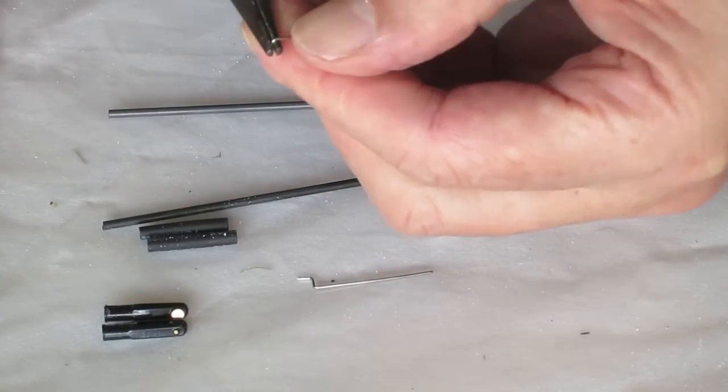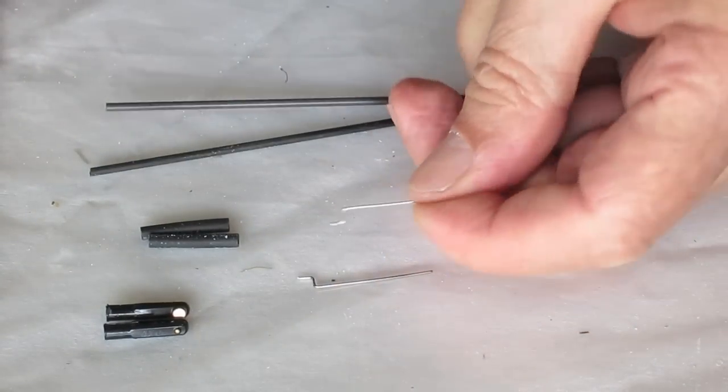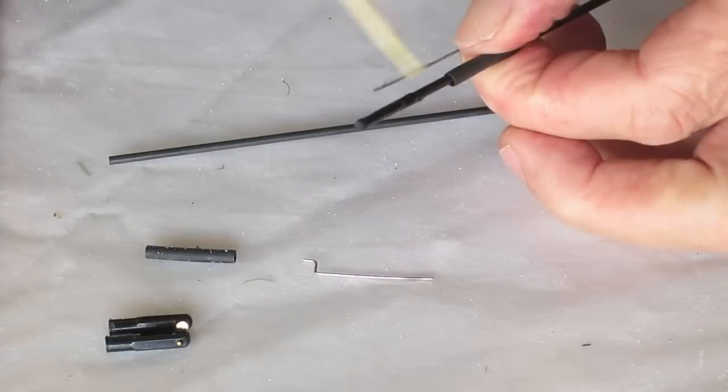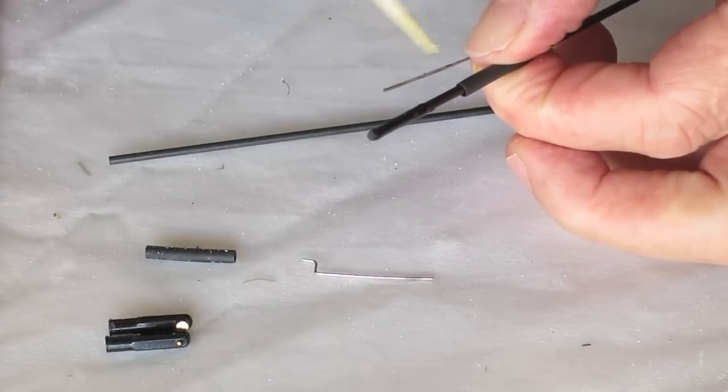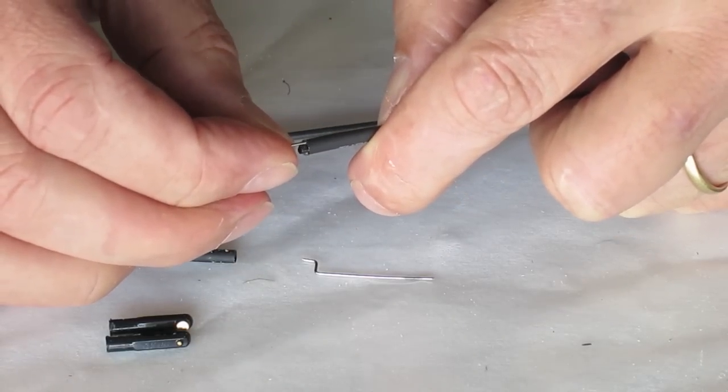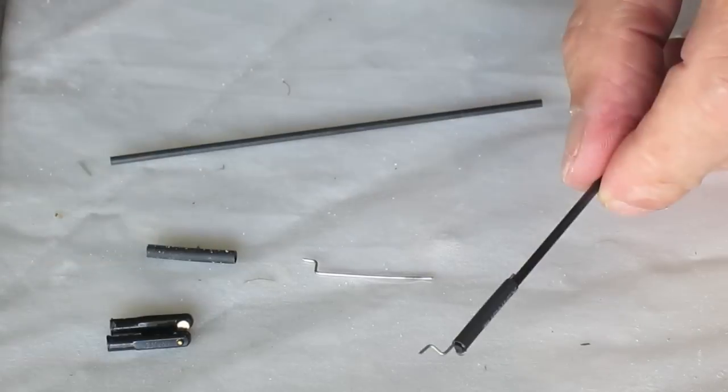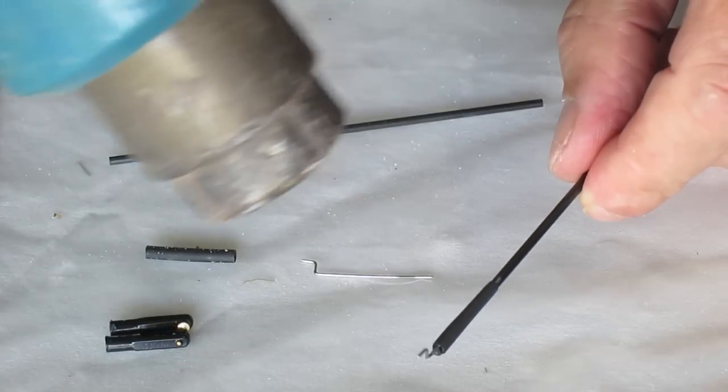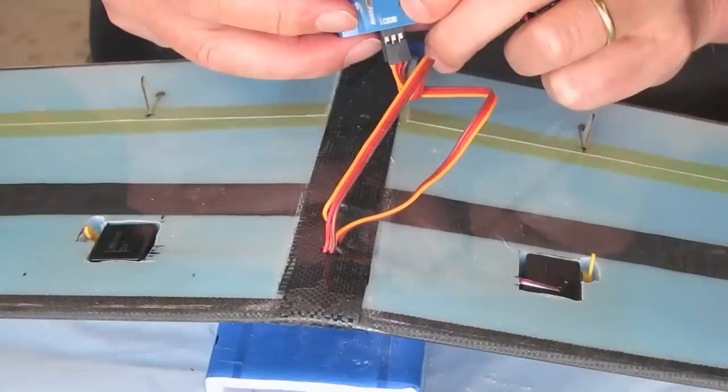Now for the aileron push rods. Bending up some little Z-bends using the supplied wire and then gluing that onto the end of the carbon fibre rod. Used a little bit of heat shrink to hold it in position.